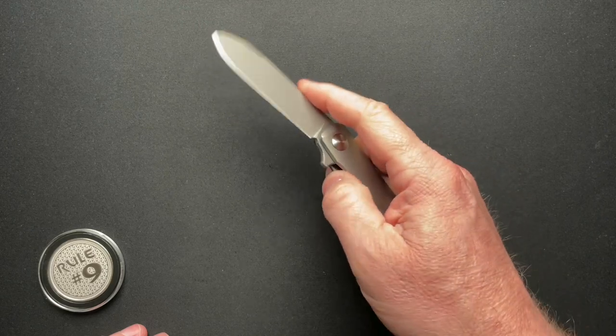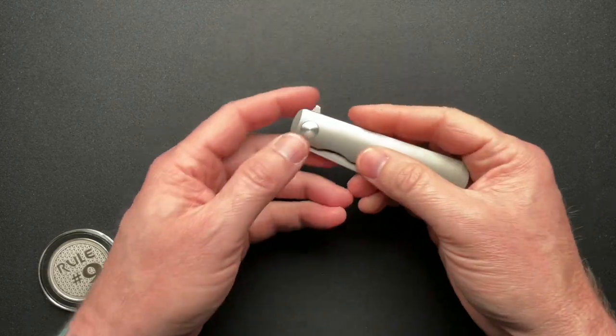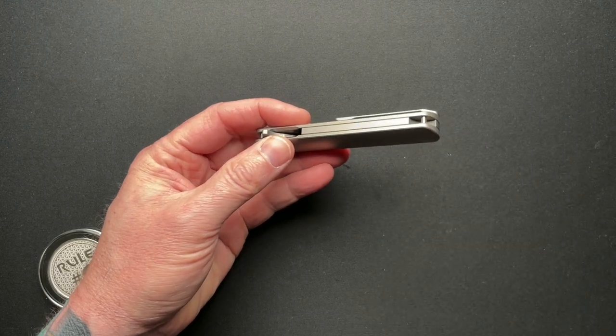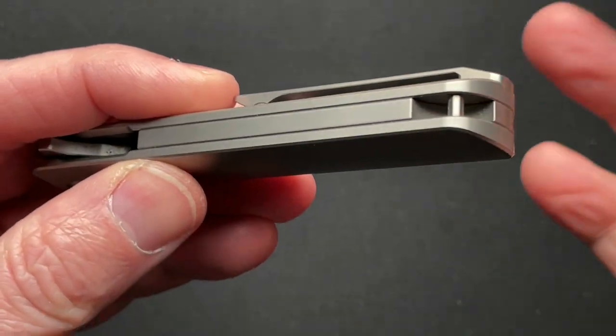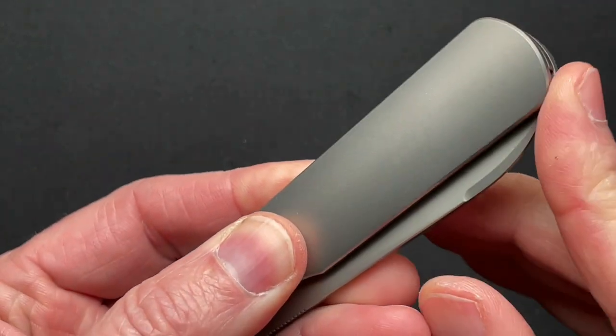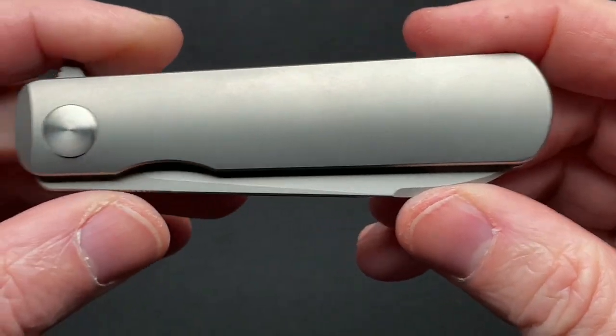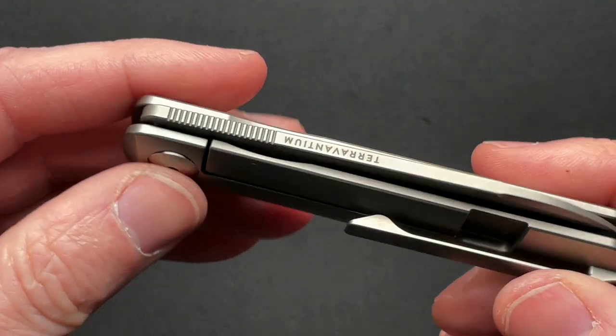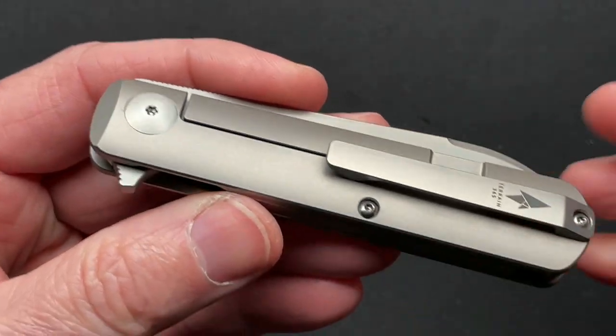It weighs in at just 2.9 ounces. So it's super lightweight, has a lanyard tube here or a lanyard pin, which is super unobstructed. Just a super nice overall package that feels really good in the hand. For me, I just wish it was a little bit bigger.